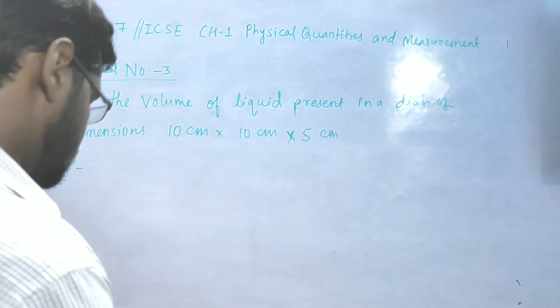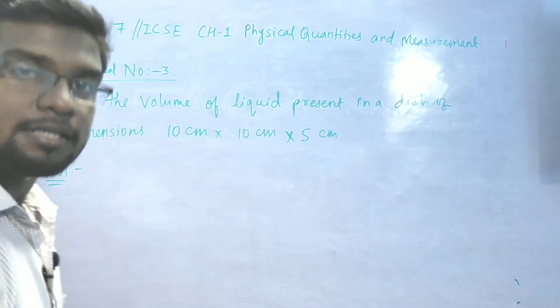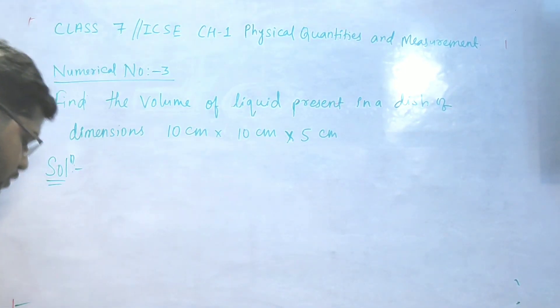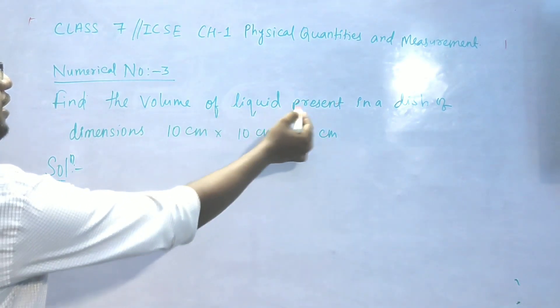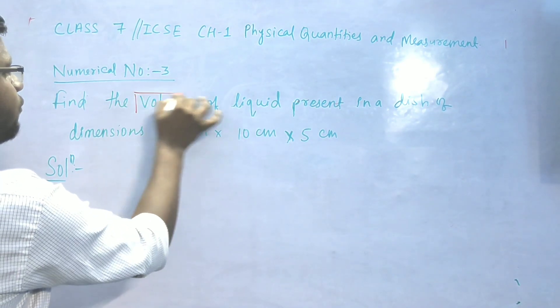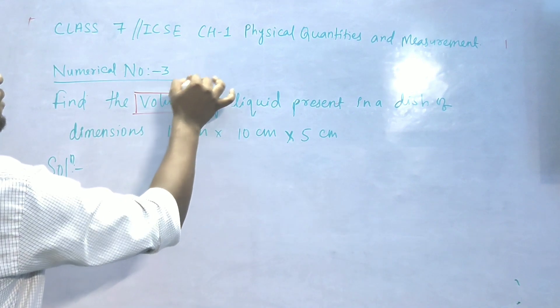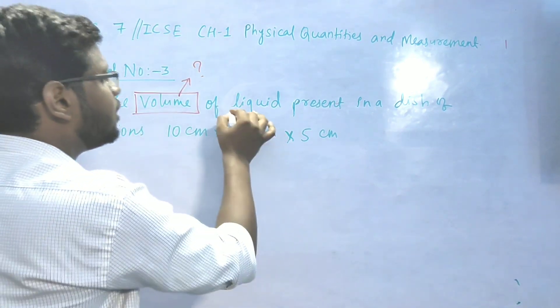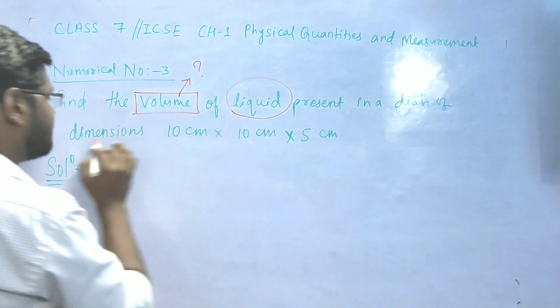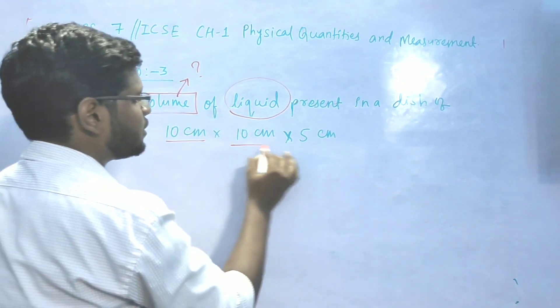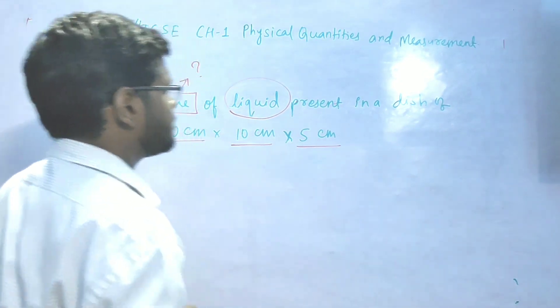So first of all we will just try to understand the question, that is important. Find the volume of liquid, that means we have to calculate the volume of liquid present in a dish of dimension 10 cm, 10 cm and 5 cm.